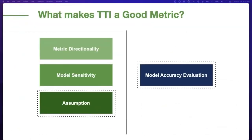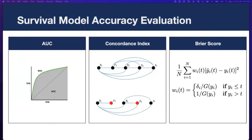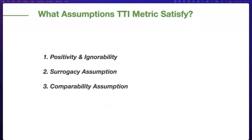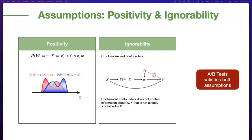Since our proposed metric is a model metric — a prediction coming from a survival model — in addition to sensitivity and directionality, we must also check certain assumptions before using the metric and ensure that model accuracy passes certain thresholds. Survival model accuracy can be measured using common metrics proposed in the literature, including AUC, concordance index, and Brier score. Let's look at what assumptions need to be satisfied to use the time-to-event metric.